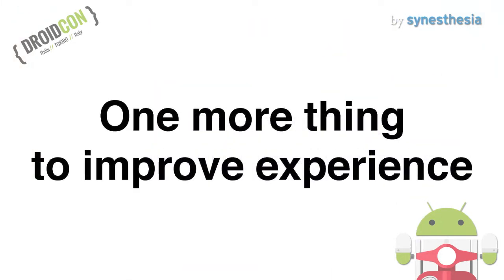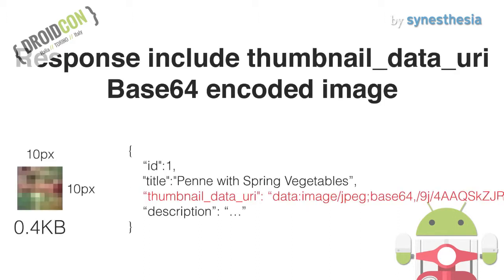One more thing to improve experience: our response includes a related URI that is a base64 encoded image. The image is 10 pixels on each side and its size is 0.4 kilobytes. Thereby we can display a thumbnail as soon as the response arrives. This size is small but there is a big improvement in perceived speed.